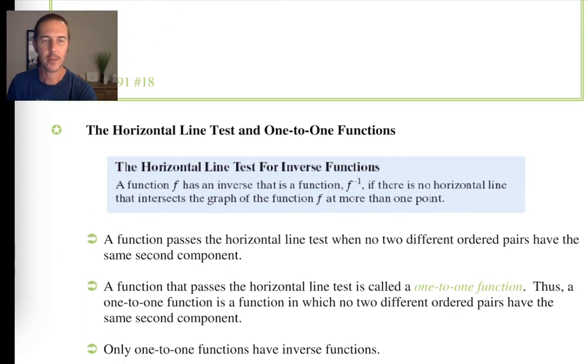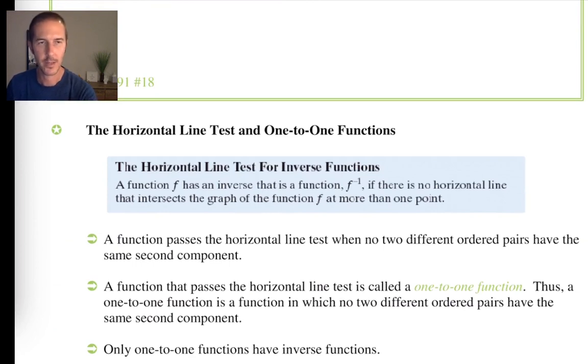The horizontal line test. Now you're familiar with the vertical line test. The vertical line test is what we use to test to see if the graph that we're looking at is the graph of a function. And a function, as you might recall, by definition is a relation that doesn't have any repeated x values. So if we looked at it as a list of ordered pairs, you don't want to see that any x values used more than once.